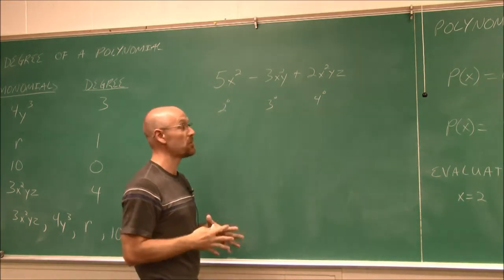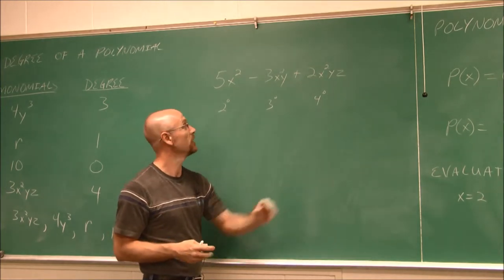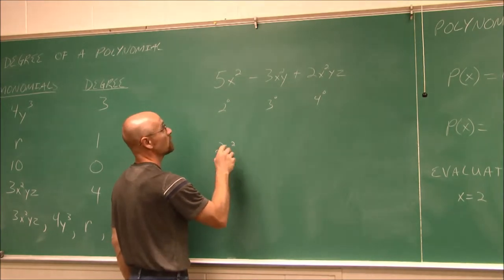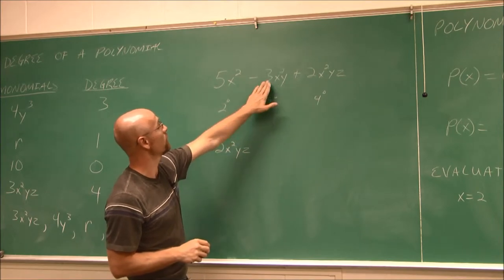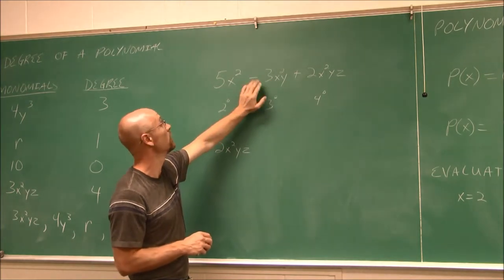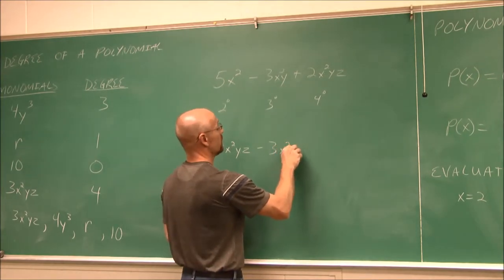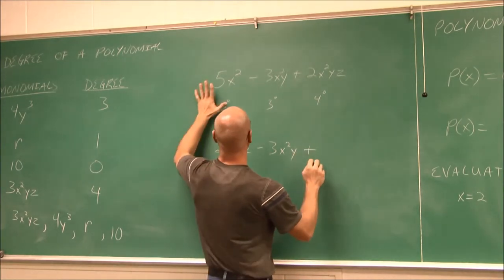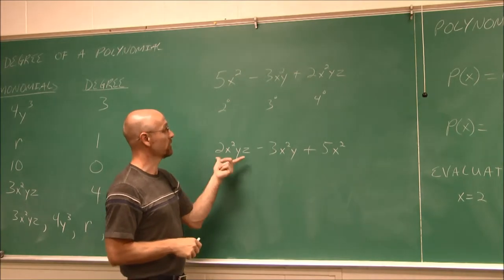Well, we like to have them in descending order. I want the highest degree first, then the next, and then the lowest. So if this is my highest degree, I'm going to write it first, 2x squared yz. The next one is this. This is my third degree. So I'm going to write this one. This addition or subtraction belongs to that number. So that negative has to come with that 3. So that's my third degree. And then my second degree. This is a positive 5x squared.